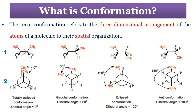As this talk deals with the Conformation of Nucleic Acids, let's first understand what is Conformation. The word Conformation refers to the three-dimensional arrangement of the atoms of a molecule in their spatial organization. To understand this, look at the given example of Butane, whose molecular formula is C4H10. You can see differential arrangements of the atoms of the same molecule in space. The first arrangement is the line wedge-dash Conformation of Butane, and the second is the Newman Projection Conformation of Butane.